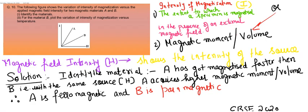If you see, the source is on the x-axis and is applying magnetic field intensity, and the specimens A and B are getting magnetized. The specimen A gets magnetized very fast and the specimen B is taking some time to get magnetized.